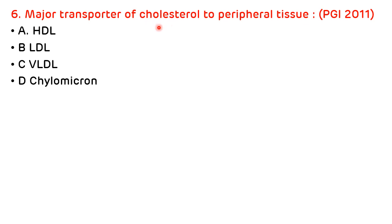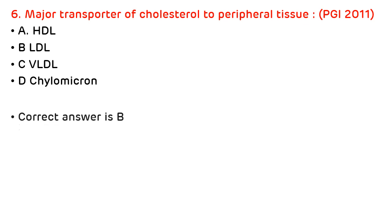Sixth question: major transporter of cholesterol to peripheral tissue, asked in PGI 2011. Options are HDL, LDL, VLDL, and chylomicron. The major transporter of cholesterol to peripheral tissue is LDL. So the correct answer is B.